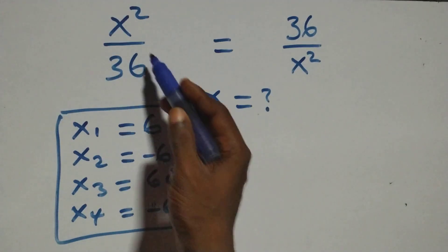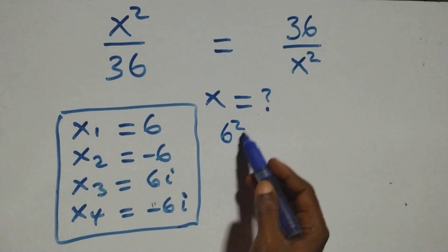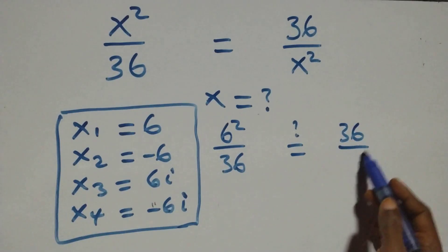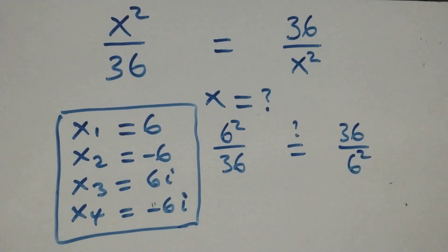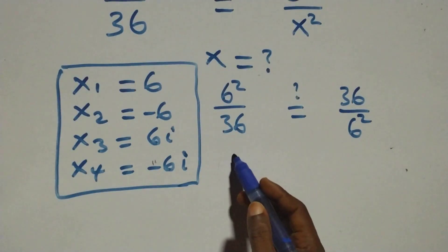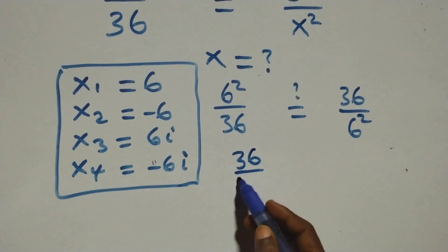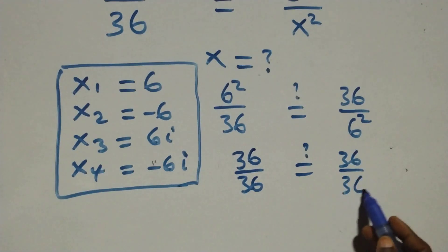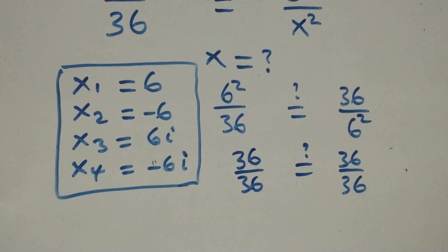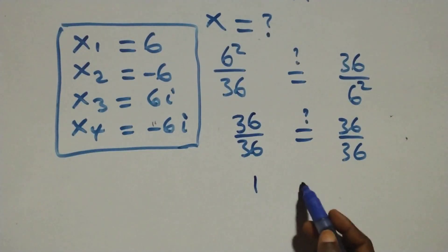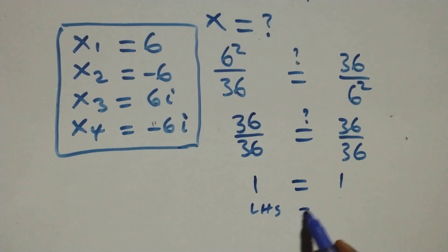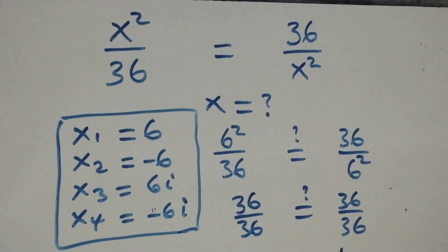When x = 6, the equation becomes 6² over 36. Is this equal to 36 over 6²? That's 36 over 36, which equals 1, and the right hand side is also 36 over 36, which equals 1. Left hand side equals right hand side, so x = 6 satisfies the given problem.